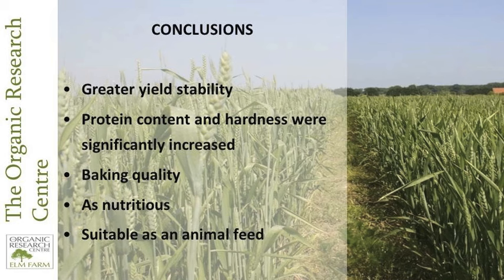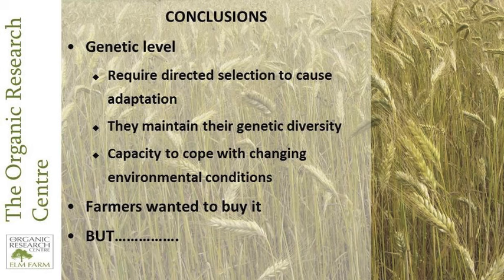This population has been around Europe, on a number of farms, and on this farm. What we found is that the yield within the population has greater stability than the parents. Protein content and hardness were significantly increased from the parents — this is in organic systems. Baking quality was good, they were as nutritious as the parents, and it's also suitable for animal feed. At the genetic level, all the genes basically stay there. You can push it through mass selection — on height, grain size, or grain colour — and shift it a little, but it bounces back. Even through UK conditions, this genetic diversity is maintained. We did put it through a Hungarian winter, which was a real genetic bottleneck and we lost some genetics there, but with UK conditions it's maintained. So you have this capacity to cope with the changing environment.